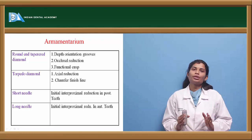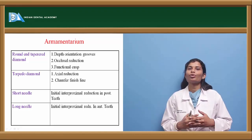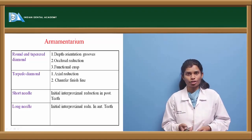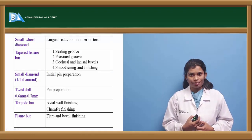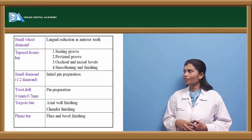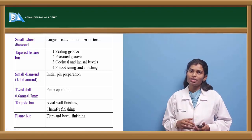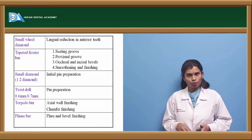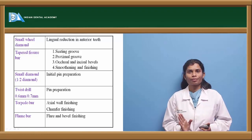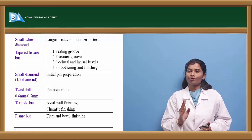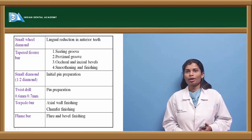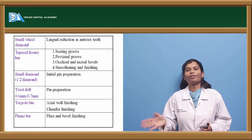A short needle diamond is used to break proximal contact in posterior cases; a long needle is used for anterior cases. A small wheel diamond is used to attain lingual reduction. A tapered fissure bur is helpful for placement of seating grooves, proximal grooves, and the bevels required on the final preparation.